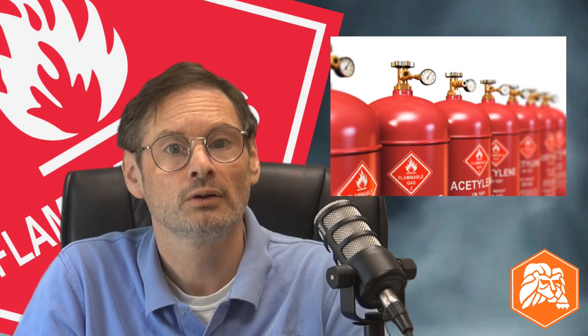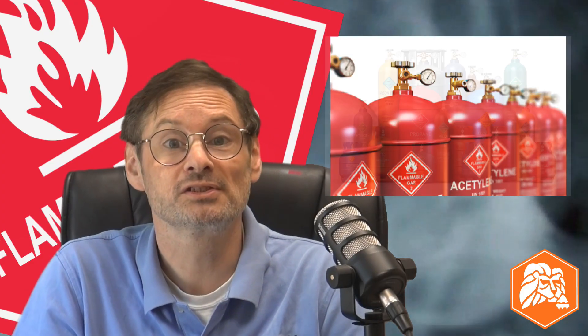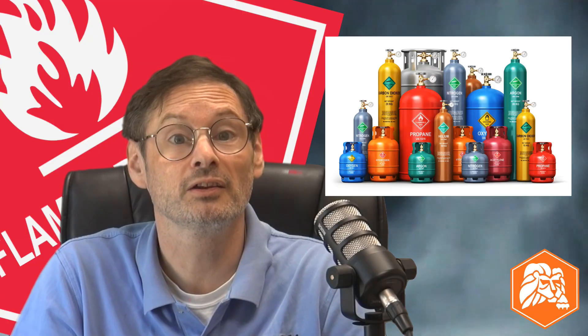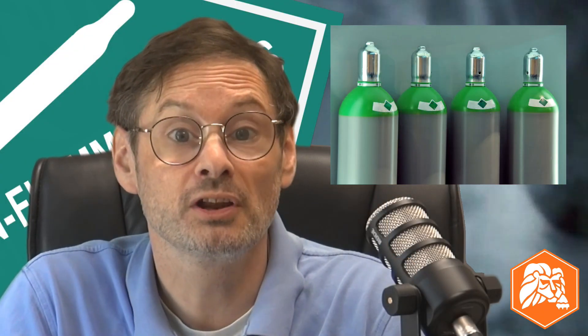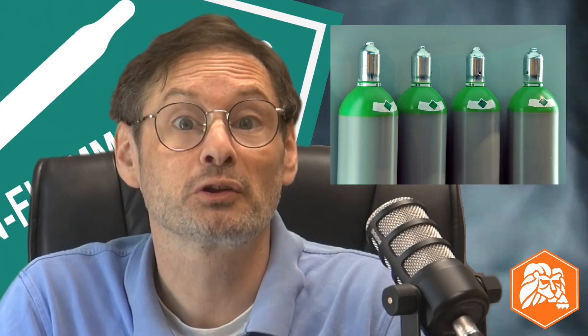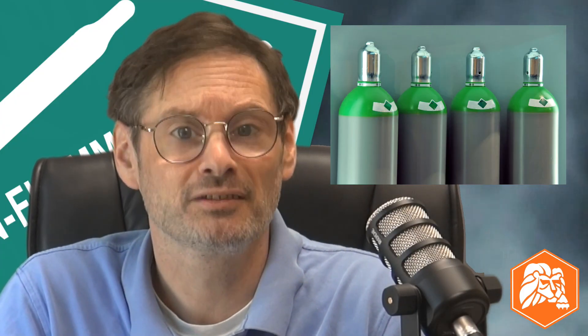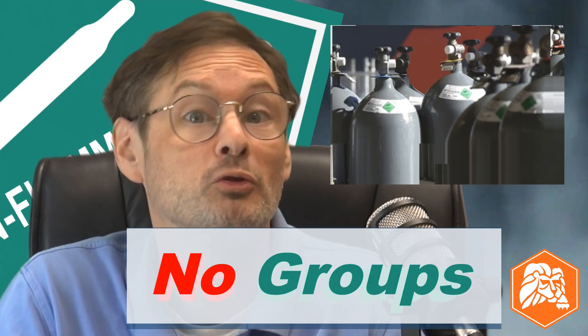Why not? These are gases shipped under pressure in specification cylinders, and the primary concern here when it comes to transportation is containing the gas in the cylinder. UN-rated cylinders are engineered, built, tested, and regularly retested to make sure that they will contain any gas that's inside, regardless of the chemical properties of the gas. So there's no packing group for Division 2.1s or 2.2s.